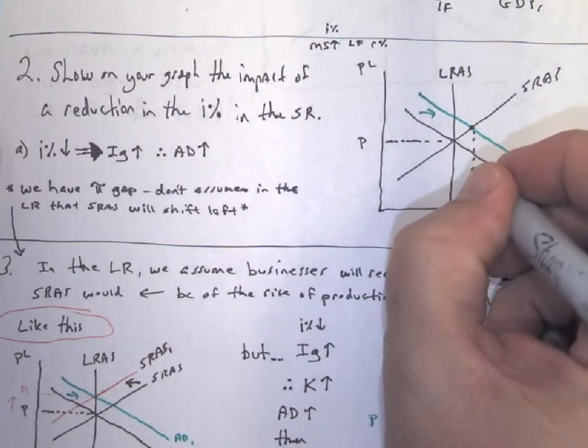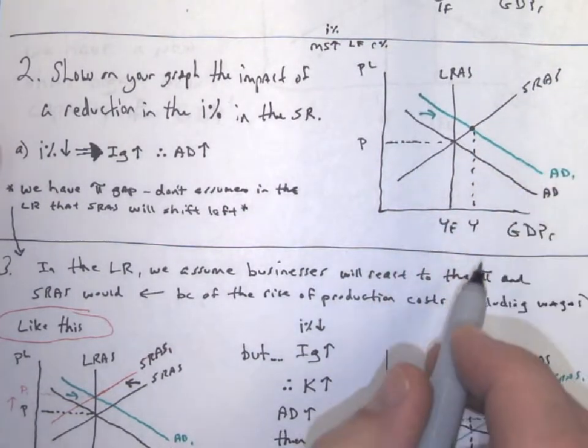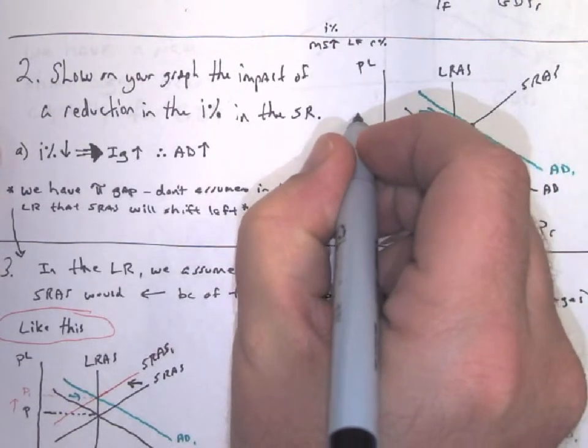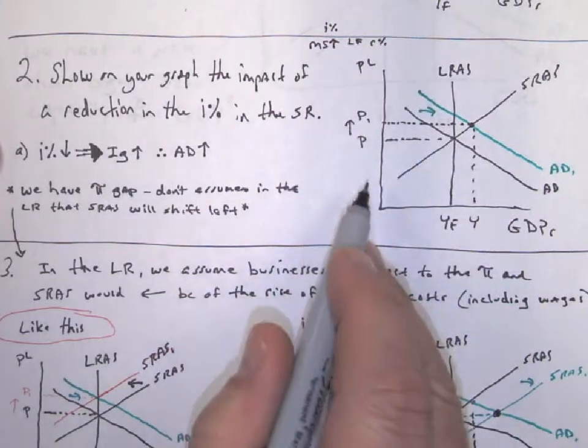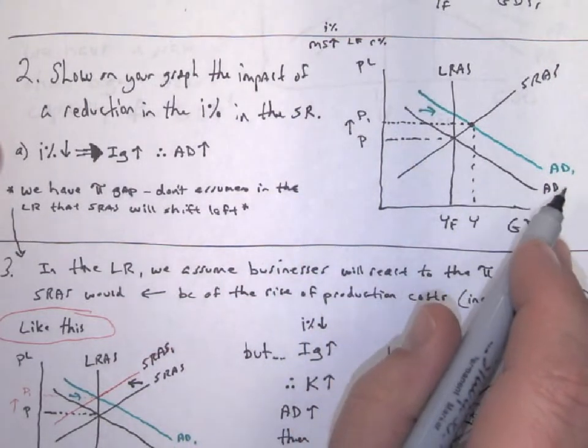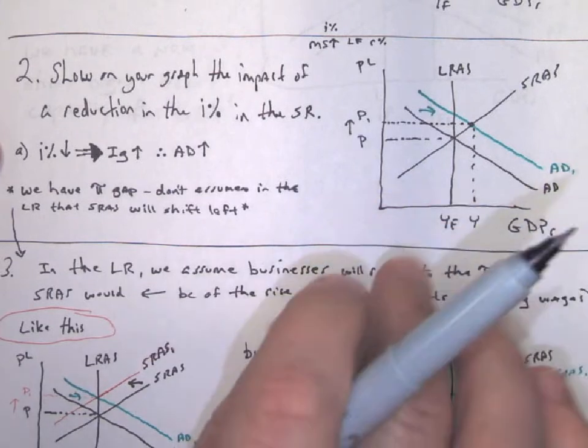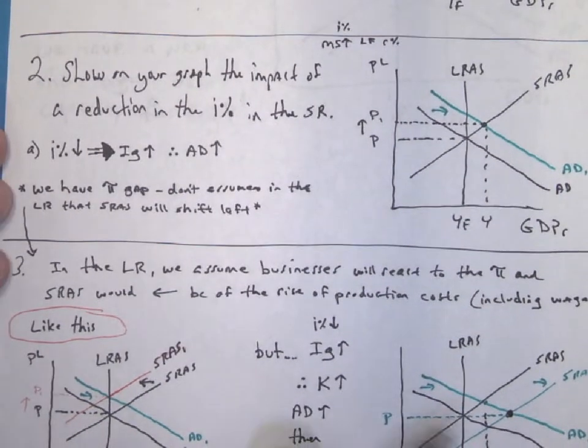And of course, in that short run equilibrium, we would end up with an inflationary gap. So we can see from this, the price levels have increased because of our rightward shift of AD to AD1. Make sure you get all those labels and arrows in there for a correctly labeled graph at this point. All right.